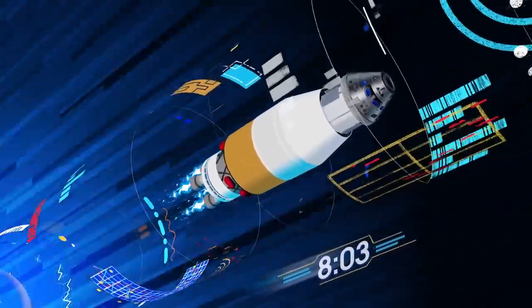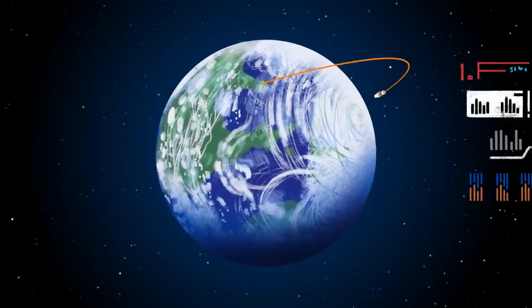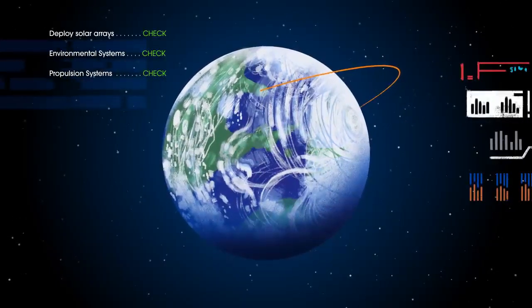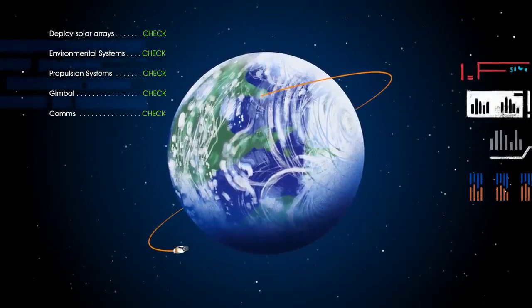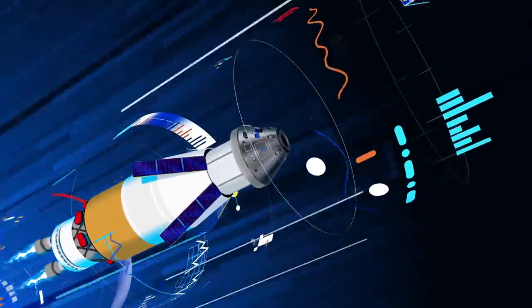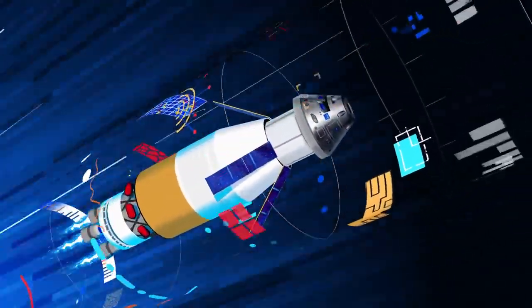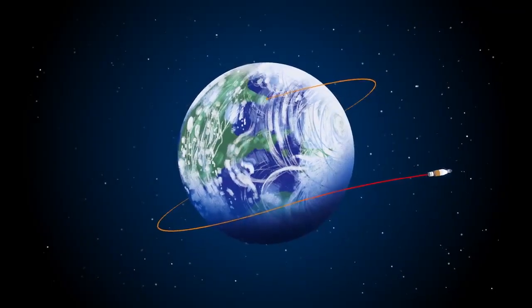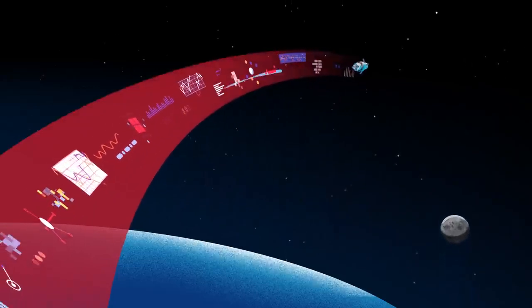The upper stage fires briefly, placing Orion into a parking orbit around the Earth. Here, the crew reconfigure the spacecraft and check systems to confirm everything is ready for deep space travel. With a go from mission control, the crew reignite the exploration upper stage engines to leave Earth entirely. The exact timing of this maneuver is critical to reach a speed that can escape Earth's gravitational pull, but also put Orion on a course that will intersect the Moon days later.